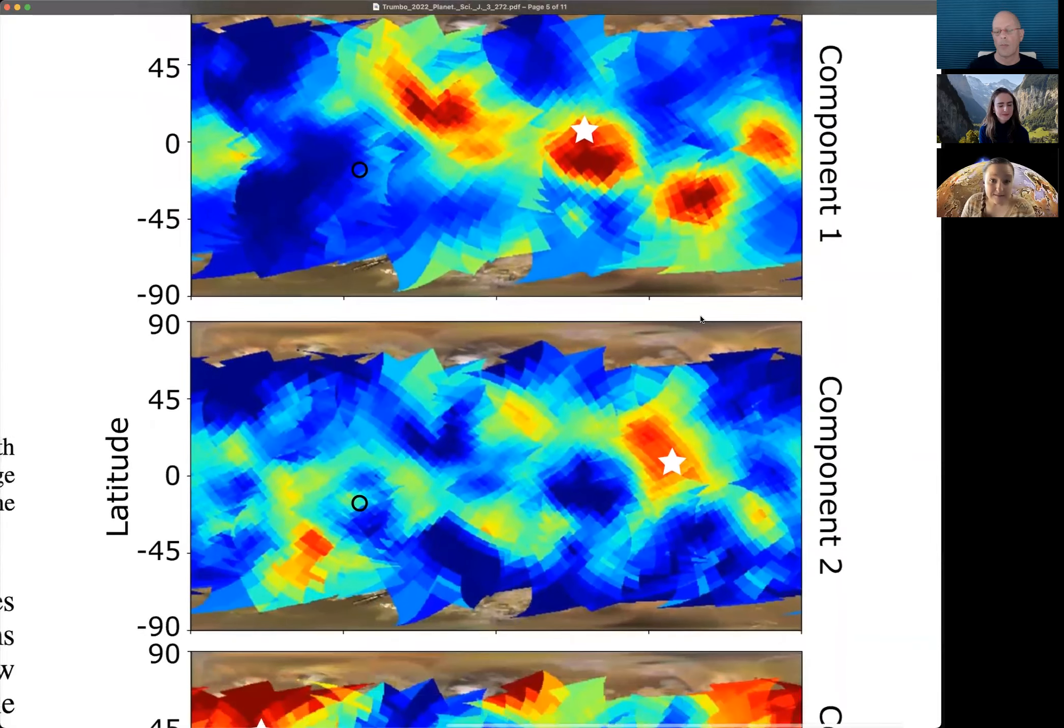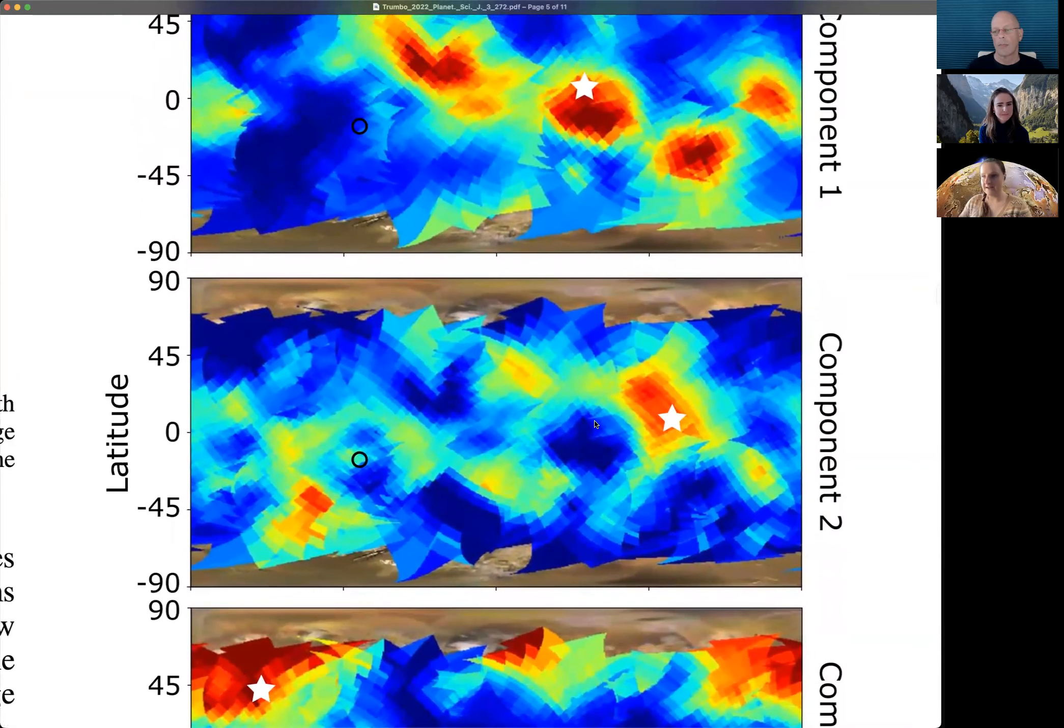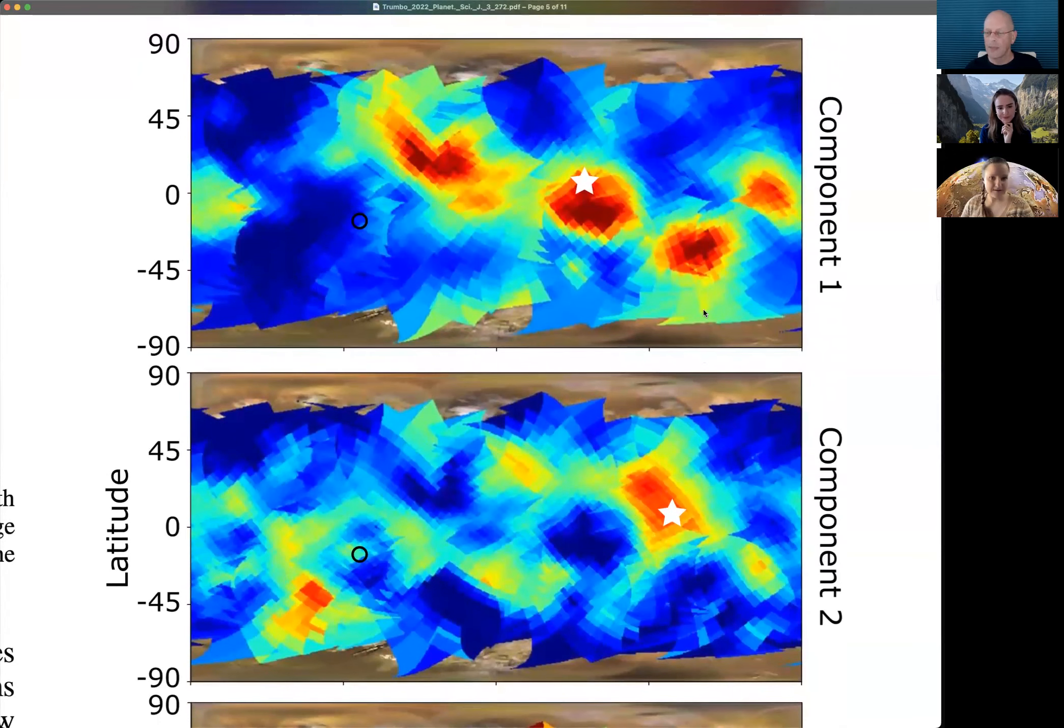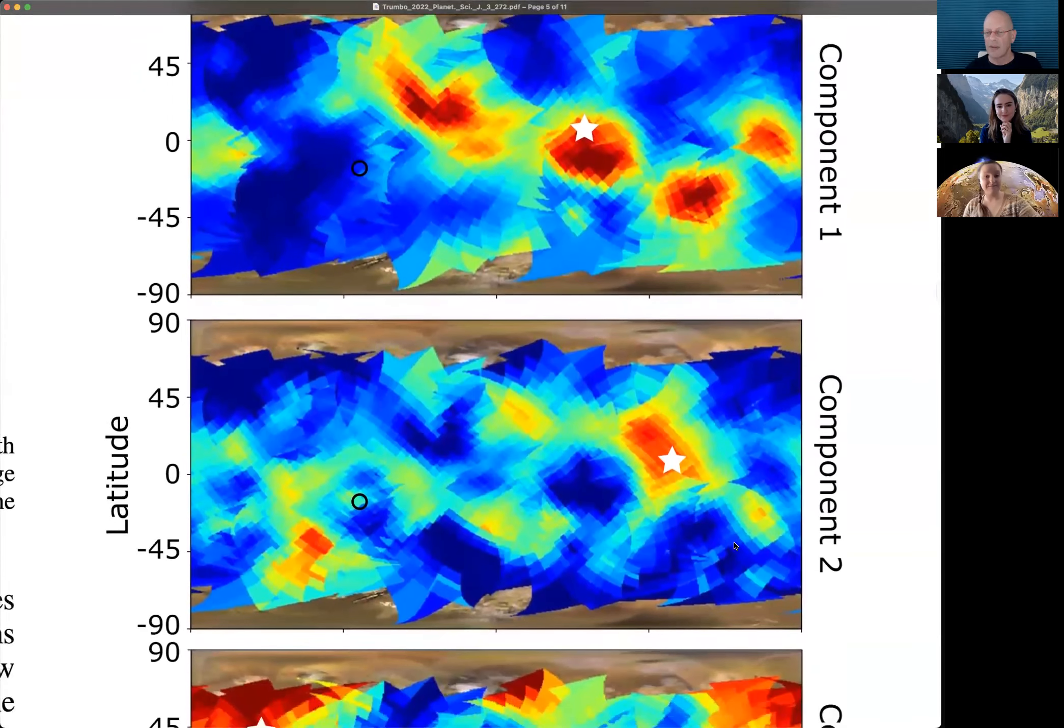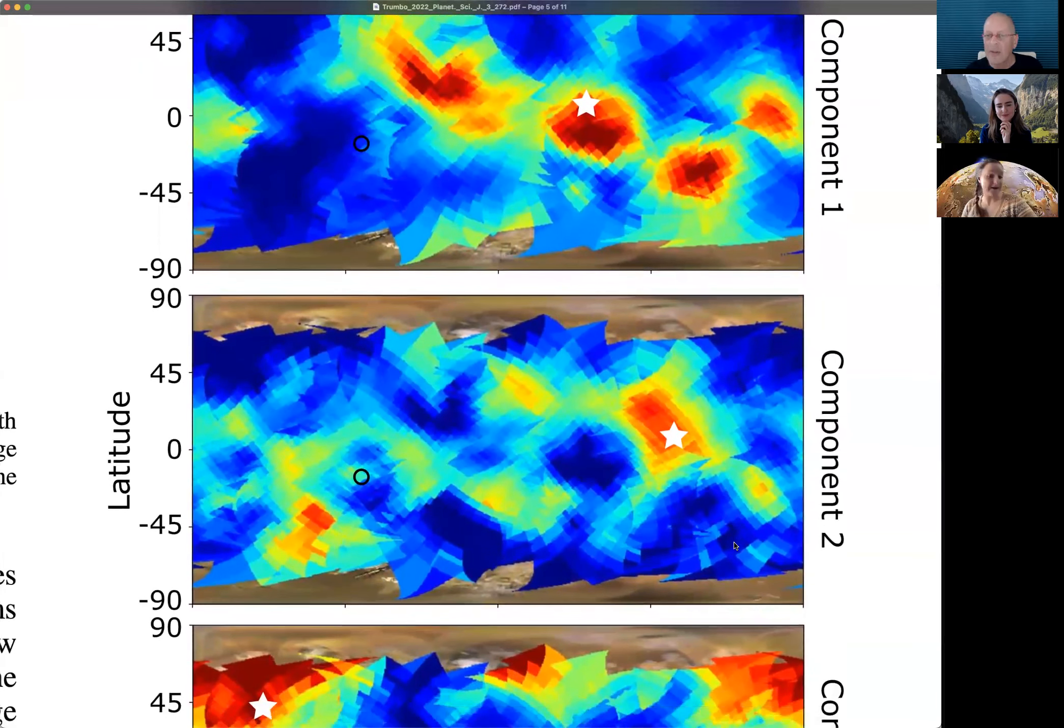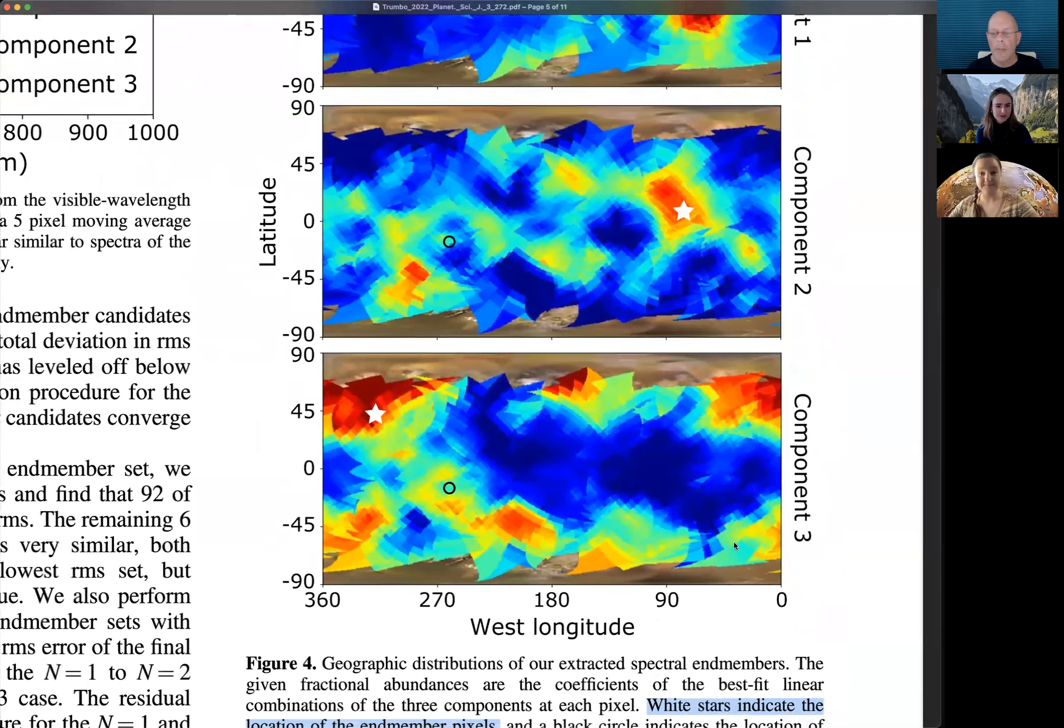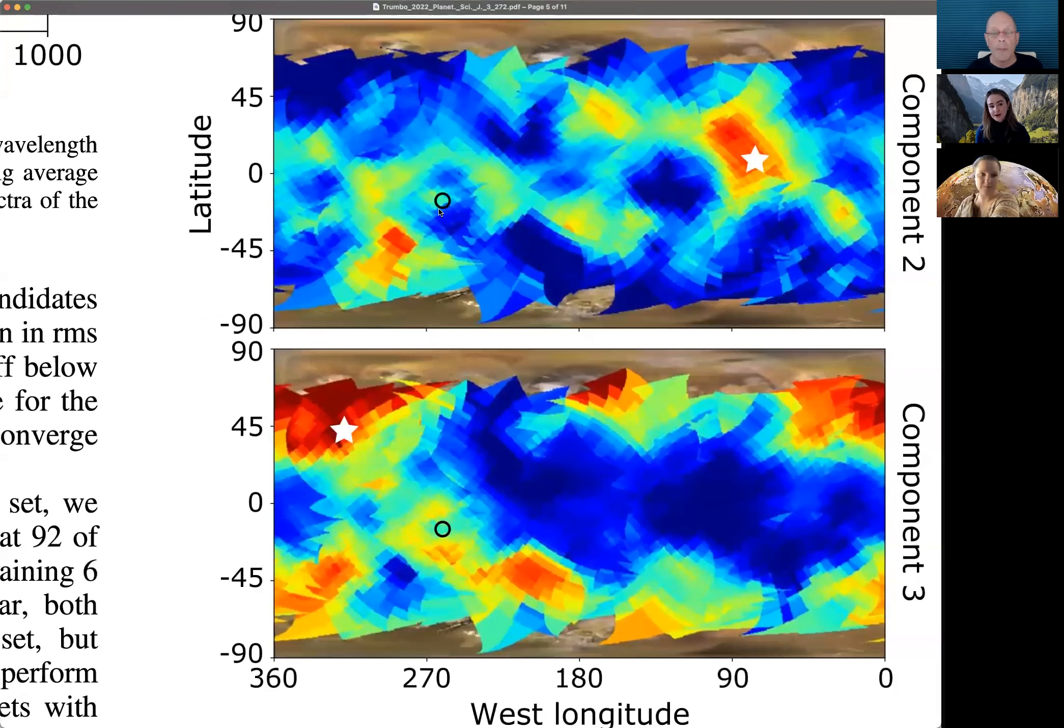Component two, which is the yellowish material, is almost enclosing that white material across the surface. So really seems to be kind of geographically surrounding those bright white deposits. I think the other interesting thing, if I could just interrupt for a second about component two, is if you look at that black circle that's indicating approximately the center of Pele, it really highlights the very center of Pele, but is kind of absent from the immediate ring around, which you see much more clearly in the map of component three. So I think that's pretty cool. That really highlights the spatial resolution you can actually achieve with HST on Io, which is pretty cool.